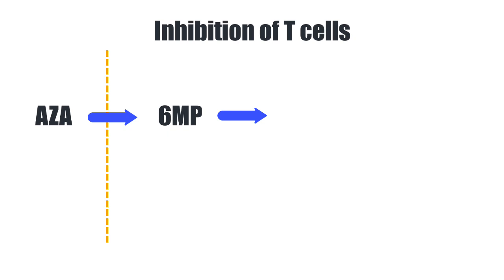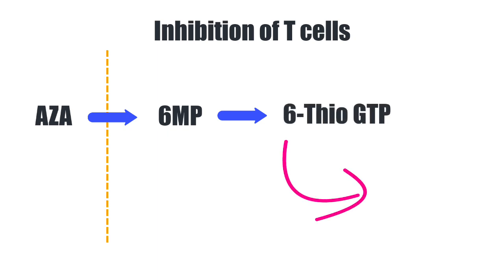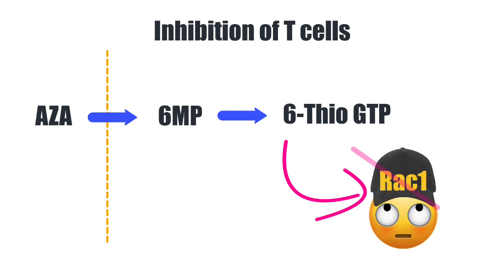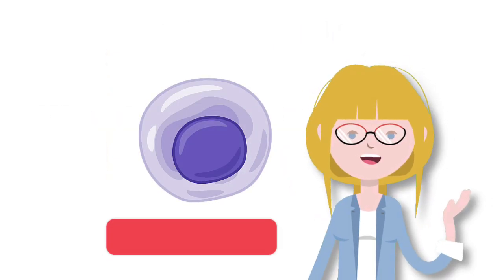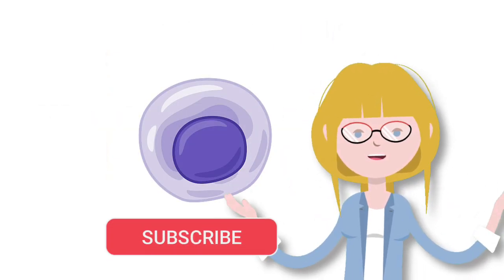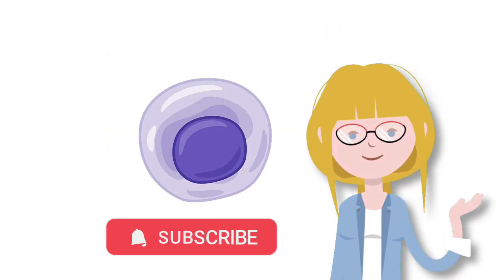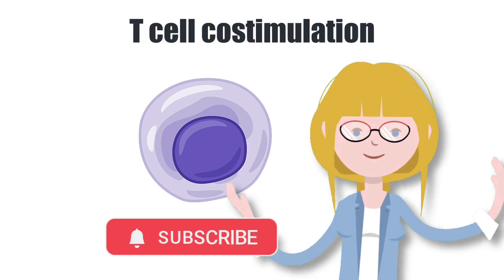But one of the metabolites, 6-Thio-GTP, sticks to a signaling molecule known as RAC1 and stops it from functioning. You don't need to know a lot about RAC1 — all you need to know is that this molecule comes about when T-cells are activated. If you have been following along with our immunology series from the beginning, you will be familiar with the concept of T-cell co-stimulation.